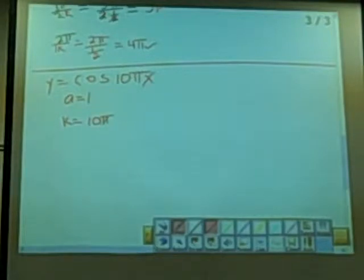So therefore, our period. What's the equation for the period? 2π over k. And so since k is 10π, that would make this 2π over 10π.